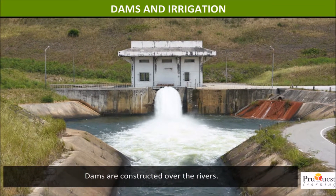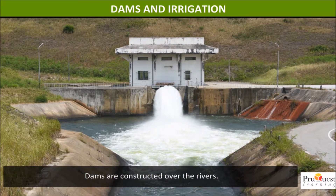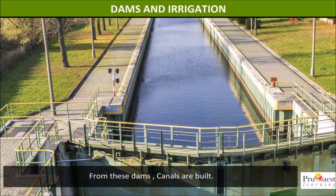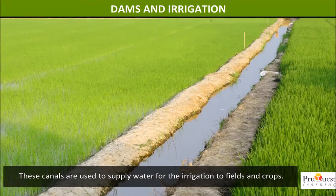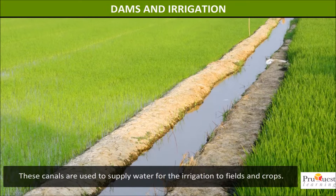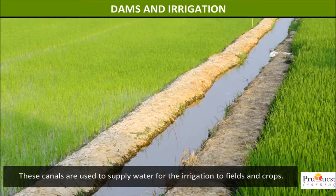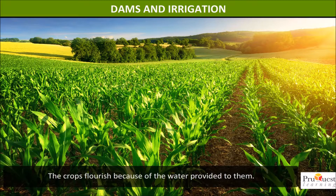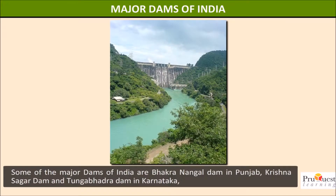Dams and irrigation: dams are constructed over rivers. From these dams, canals are built. These canals are used to supply water for the irrigation of fields and crops. The crops flourish because of the water provided to them.